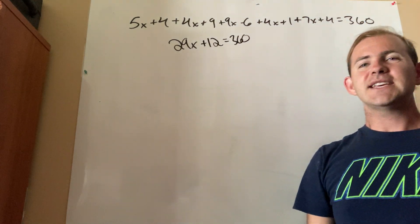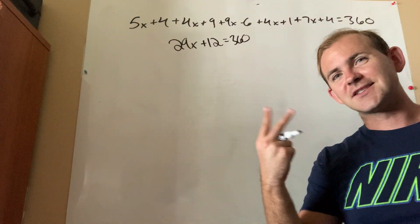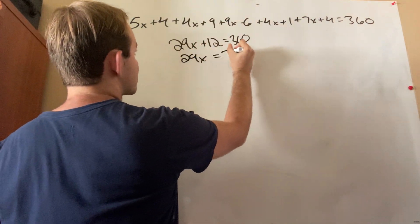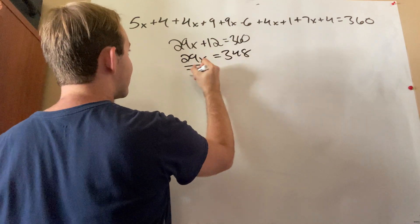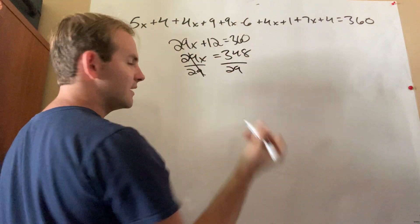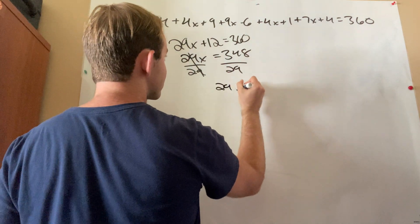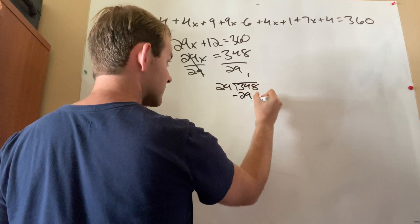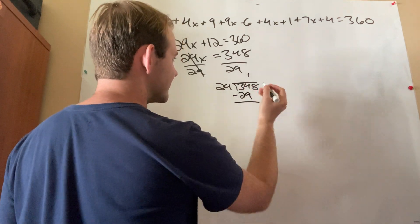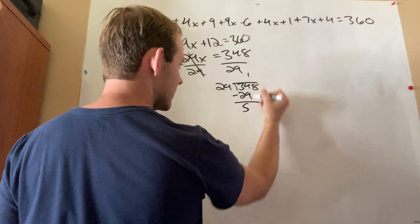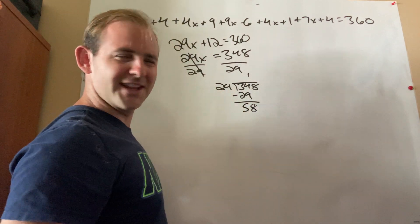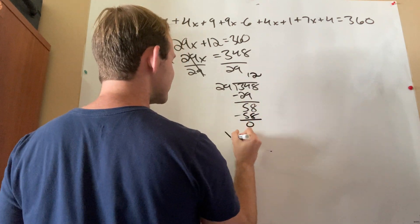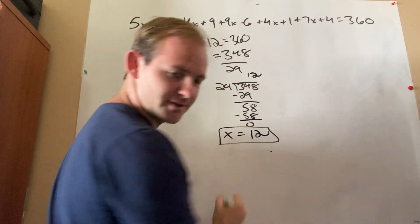All right, so I've taken a monstrous equation and turned it into a two-step. Isn't that nice? So, subtract 12 from both sides, and I get 29x equals 348, and now I need to divide both sides by 29. This is actually simple enough to do using the standard division algorithm. 29 goes into 34 once, subtract 29, and I get remainder 5, bring down the 8. Oh, it goes in evenly. How nice is that? It goes in twice. So in this particular case, x would equal 12.